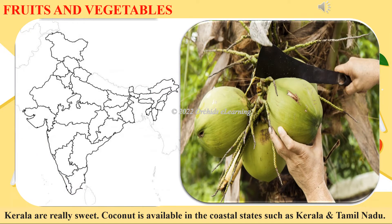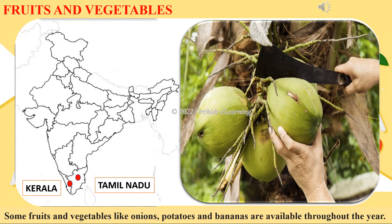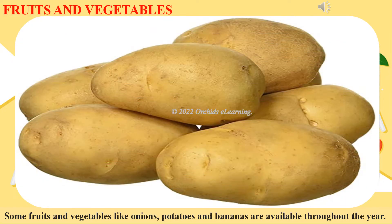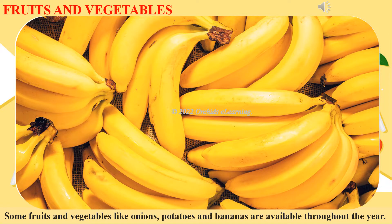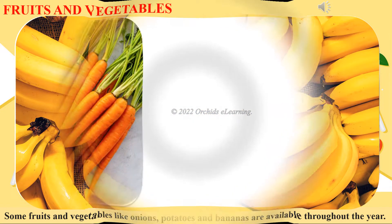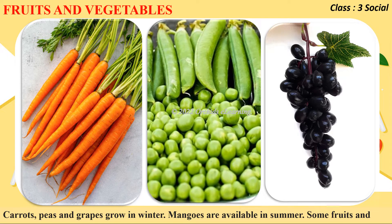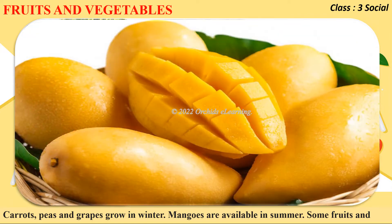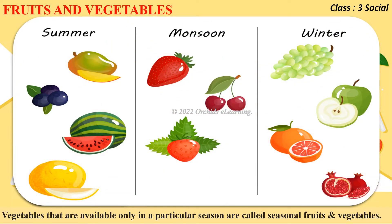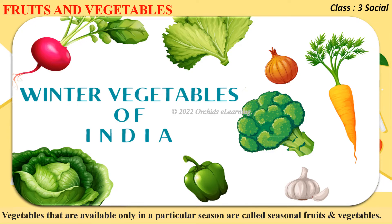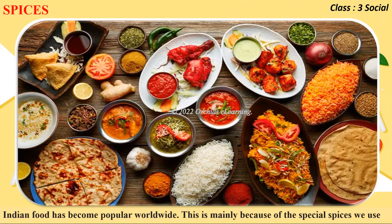Nagpur in Maharashtra is famous for its oranges. The pineapples grown in Assam, Goa, and Kerala are really sweet. Coconut is available in the coastal states such as Kerala and Tamil Nadu. Some fruits and vegetables like onions, potatoes, and bananas are available throughout the year. Carrots, peas, and grapes grow in winter; mangoes are available in summer. Fruits and vegetables available only in a particular season are called seasonal fruits and vegetables.